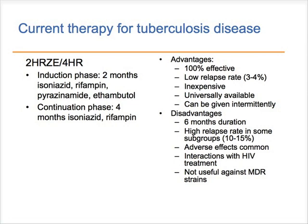Overall, the relapse rate, if patients complete this regimen and take all their doses, is low — three to four to five percent. The regimen is inexpensive and affordable in most of the world and therefore essentially universally available. In the final four months of the continuation phase, intermittent dosing three times a week or even twice a week is possible, so intermittent therapy is a possibility in the continuation phase of this regimen.